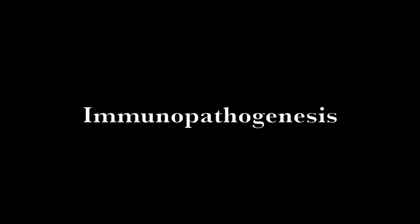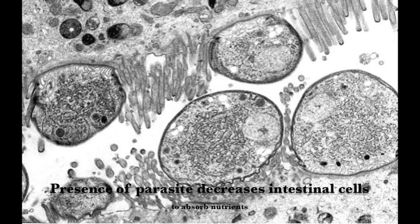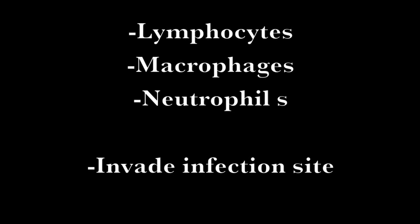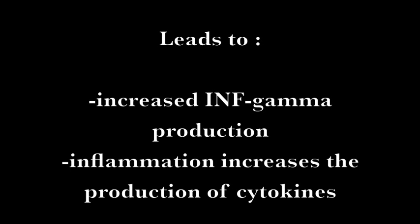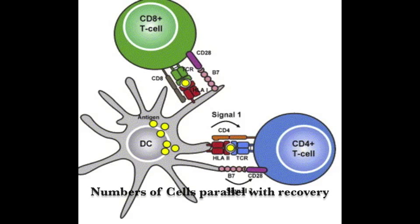During infection, sporozoites erode the villi of the intestinal wall, leaving it smooth and reducing the ability of the intestines to absorb nutrients and water. As this occurs, lymphocytes, macrophages, and neutrophils infiltrate the infection site. Infection leads to increased interferon gamma production and inflammation, increasing production of cytokines which prevent epithelial absorption and cause diarrhea. Studies have shown that numbers of CD4 and CD8 T-cells subside in parallel with recovery from infection, suggesting that the infection drives the inflammatory response.